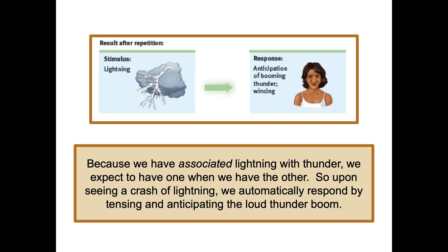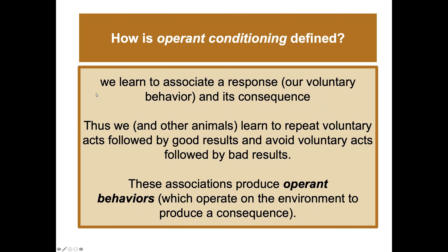Operant conditioning is a bit different — we learn to associate a response and its consequence: what immediately follows our behavior. It's important to remember that these behavioral principles apply not just to humans but across all animal species. We learn to repeat voluntary acts followed by good results and avoid voluntary acts followed by bad results. These associations produce operant behaviors which operate on the environment to produce a consequence.